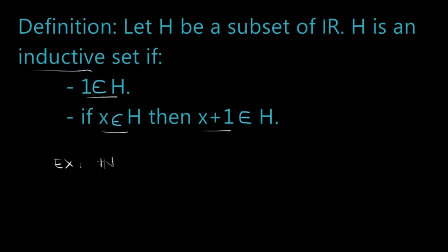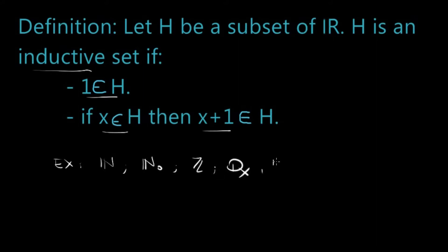A few examples: the natural numbers, because 1 is a natural number, and for example 5 belongs to the natural numbers and 5 plus 1 equals 6, also a natural number. Another possible set could be the natural numbers with the 0, because 0 belongs to this set and 0 plus 1 is also in this set. The integers, the rationals, the real numbers — these are all sets that we call inductive.